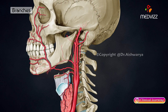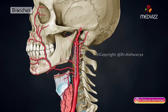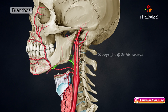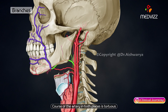Another important branch of the external carotid artery is the facial artery. It arises just above the tip of the greater cornua of the hyoid bone. It runs upwards first in the neck as a cervical part and then on the face as a facial part. The course of the artery in both regions is tortuous.